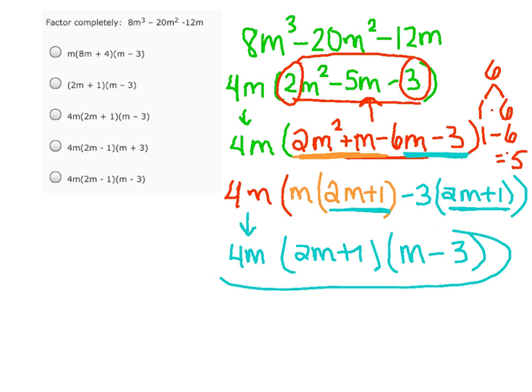So our solution, how we factor this completely is 4m times the quantity 2m plus 1 times the quantity m minus 3. So our answer is option C.